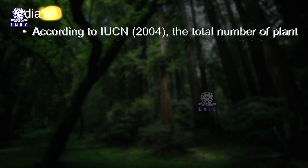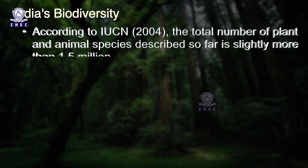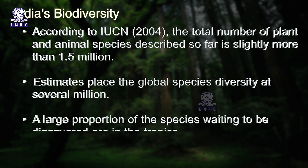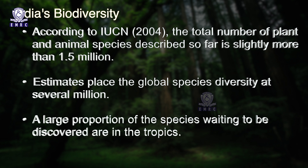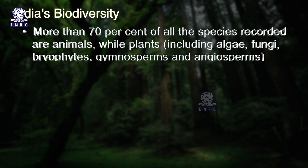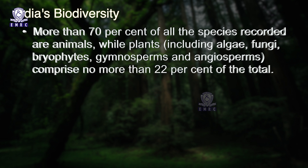India is also a vast repository of traditional knowledge associated with biological resources. According to IUCN, the total number of plant and animal species described so far is slightly more than 1.5 million. Estimates place global species diversity at several million. A large proportion of species waiting to be discovered are in the tropics. More than 70% of all recorded species are animals, while plants — including algae, fungi, bryophytes, gymnosperms and angiosperms — comprise no more than 22% of the total.